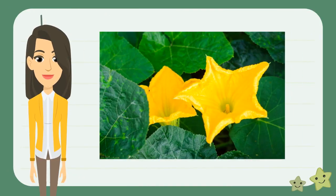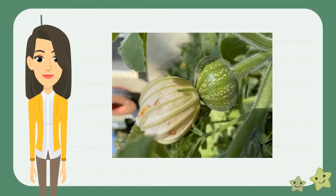After the flower buds appear, the bud opens up and the flowers start to appear. Then the pumpkin will begin to grow at the base of the flower. At first it'll be green, but then soon it will change its color.